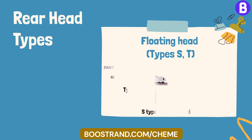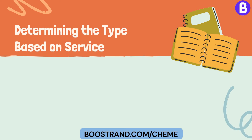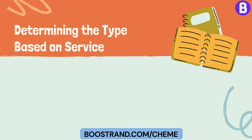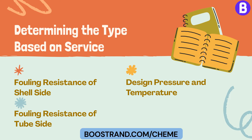Floating head, Types S and T: this design is the most flexible and expensive. It allows free expansion of the tube bundle, and both the inside and outside of the tubes can be cleaned. Shell-and-tube heat exchangers can also be classified based on the nature of the service they provide. The most important factors affecting the choice of Temer type are: fouling resistance of the shell side, fouling resistance of the tube side, design pressure and temperature, and boiling and condensing services.